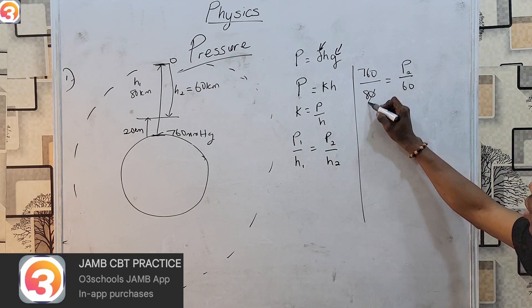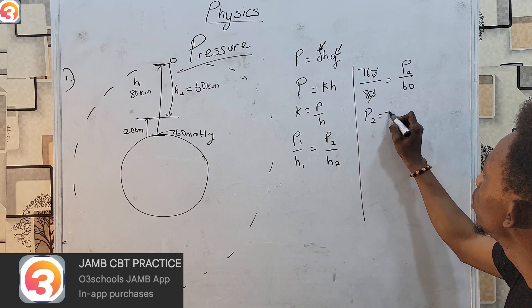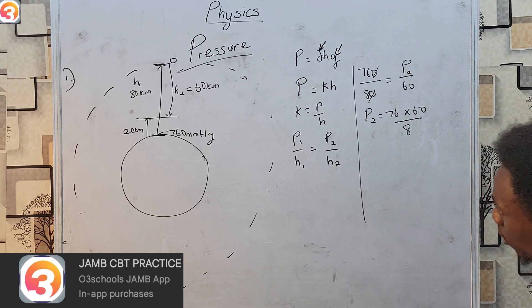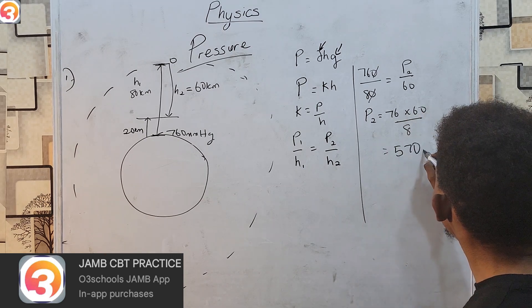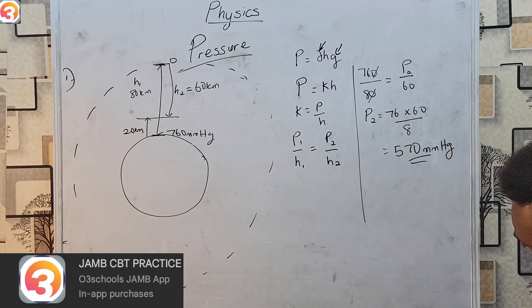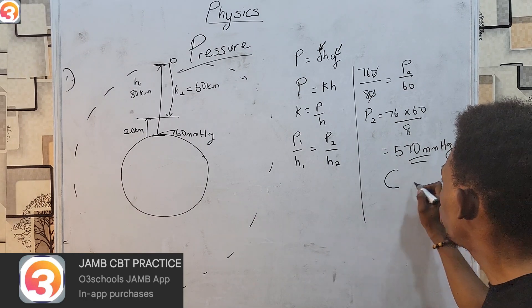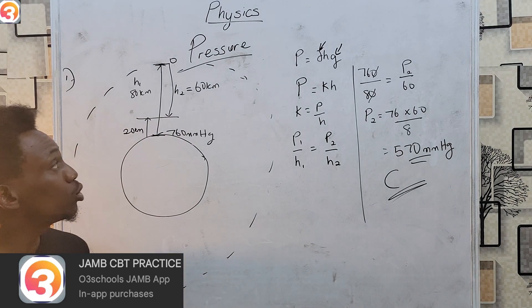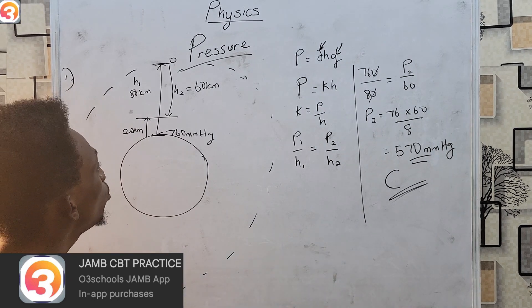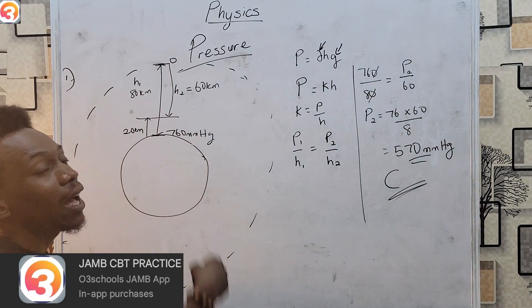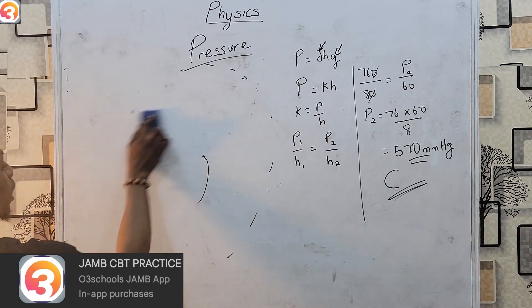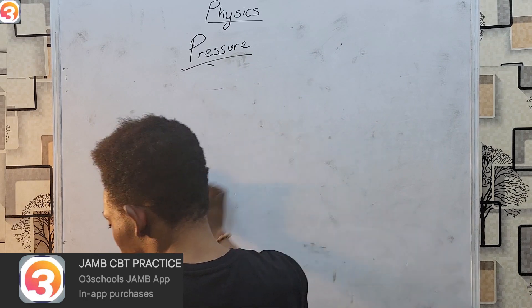So P2 = 76 × 60 / 8 = 570 millimeters mercury. Checking the Jammed App, that is option C. This is very simple — you could also solve it by interpolation, the same method used when converting temperature. As long as you are mathematically correct, any method will lead you to the correct answer.